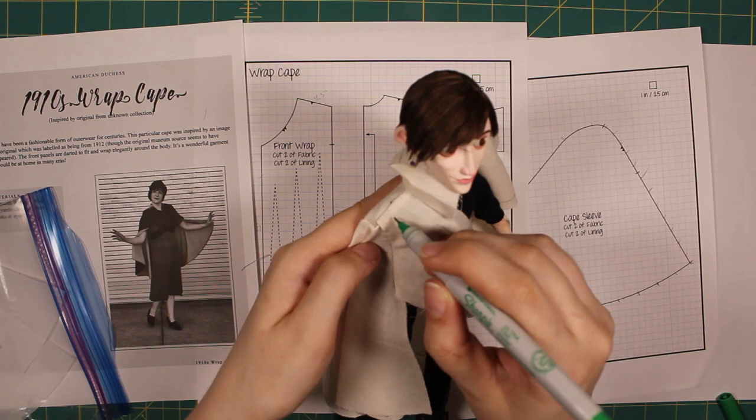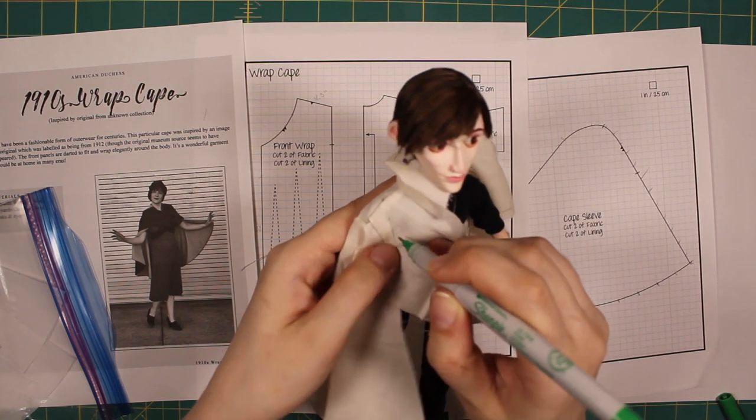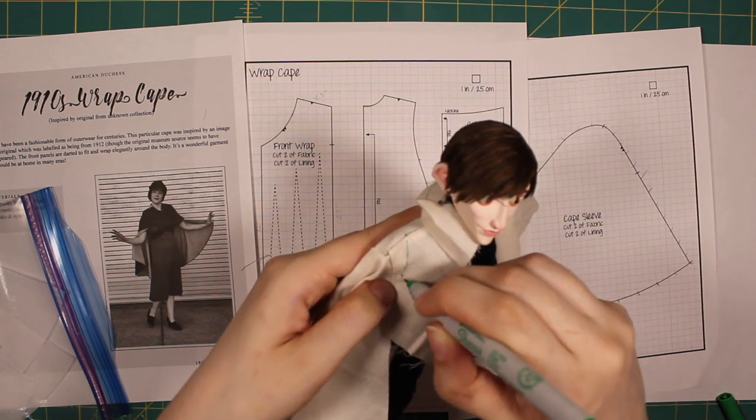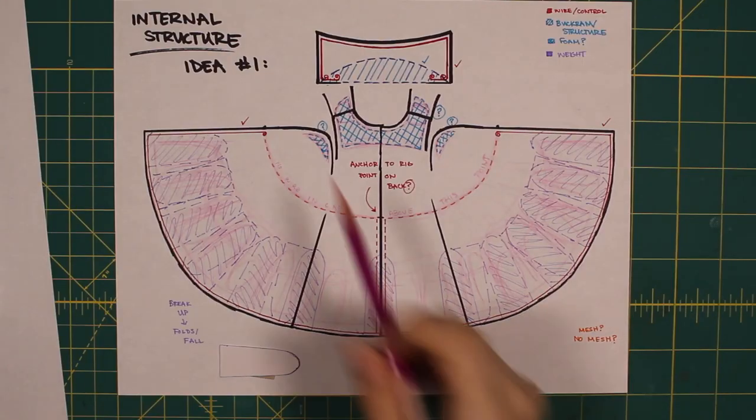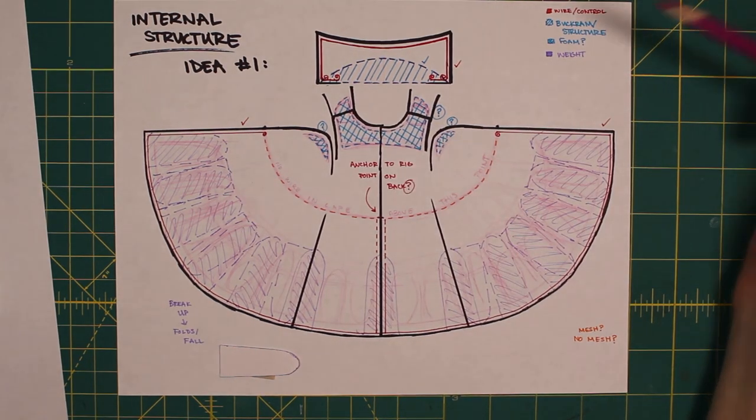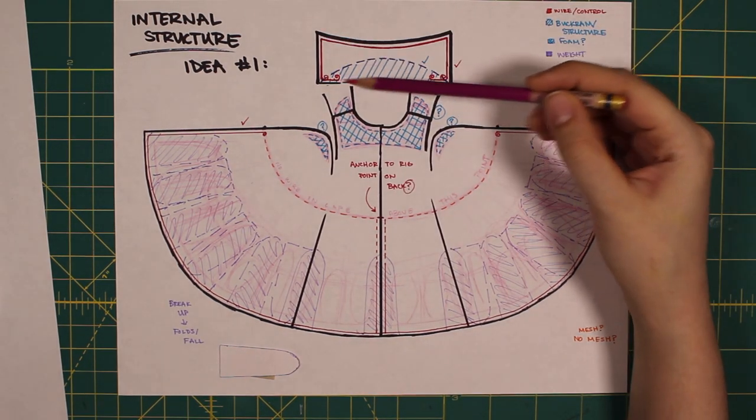I made a quick mock-up of the scaled-down version to test fit. Most of the alterations needed were in the wraps themselves and the bottom hem. When I had a fit I was pleased with, I traced out the pattern pieces in a way that I could start brainstorming how the inside might work.